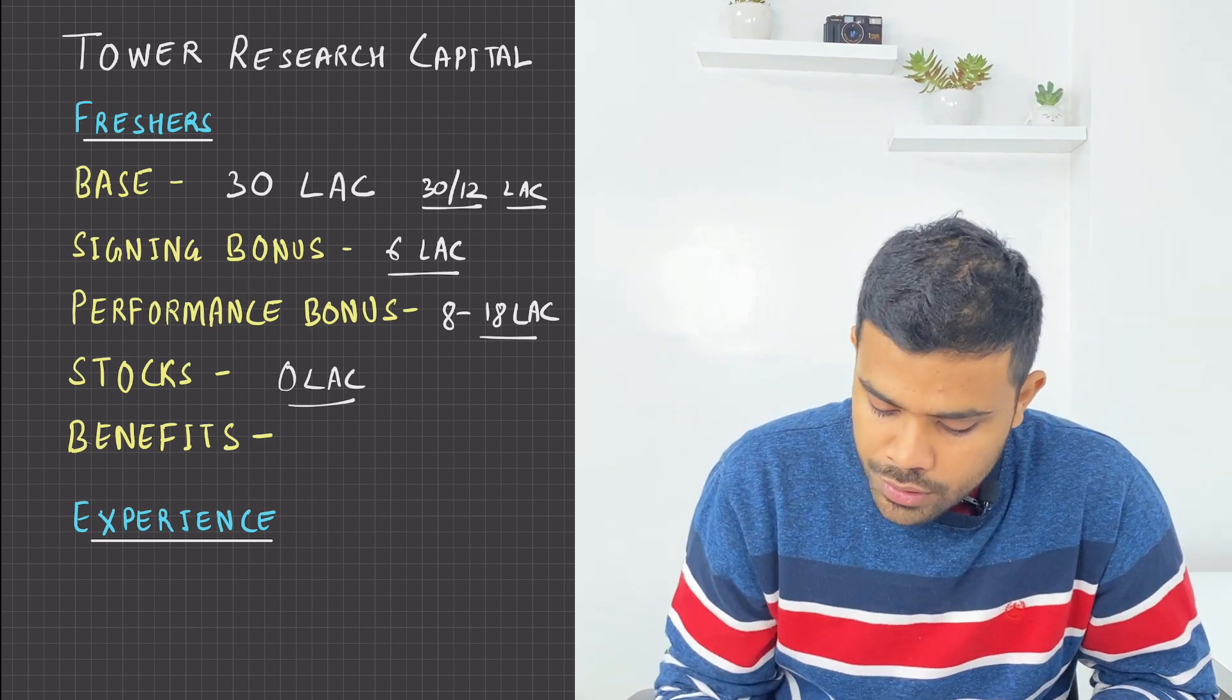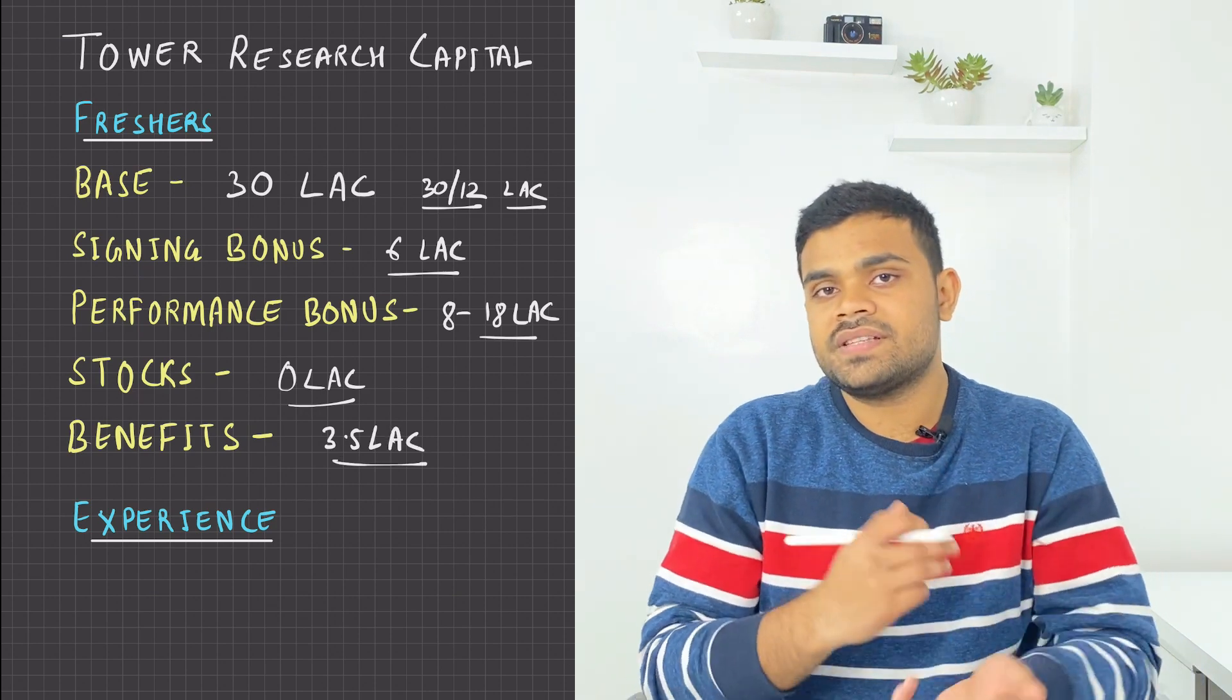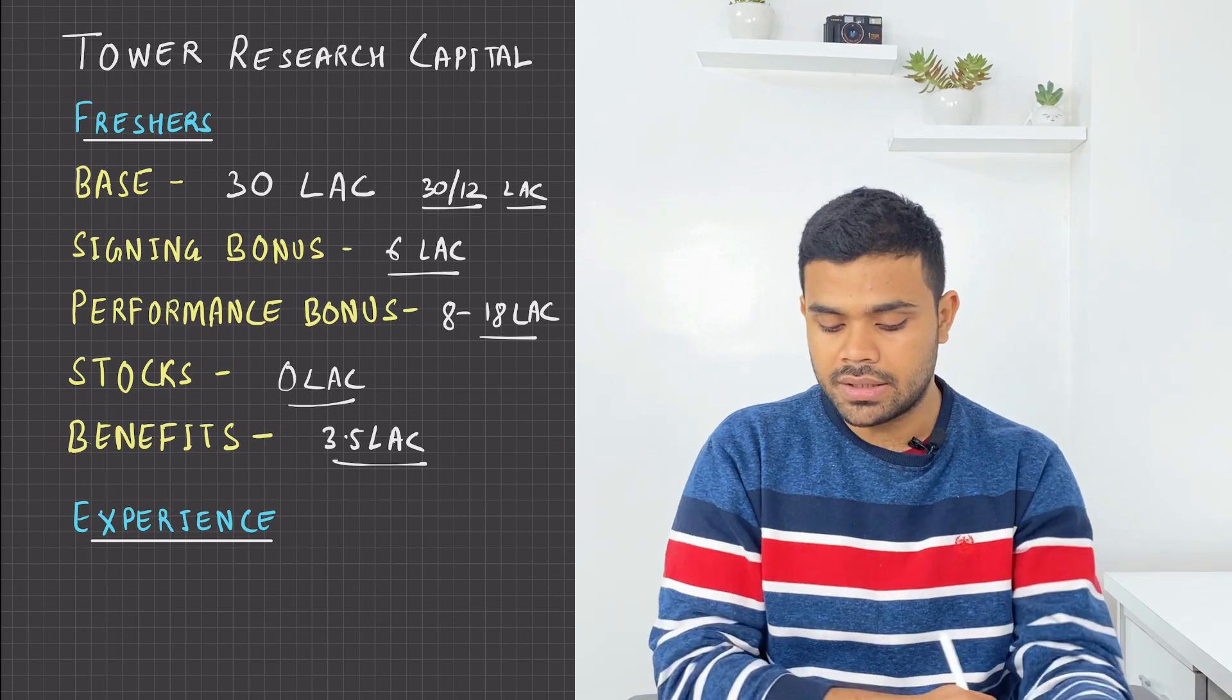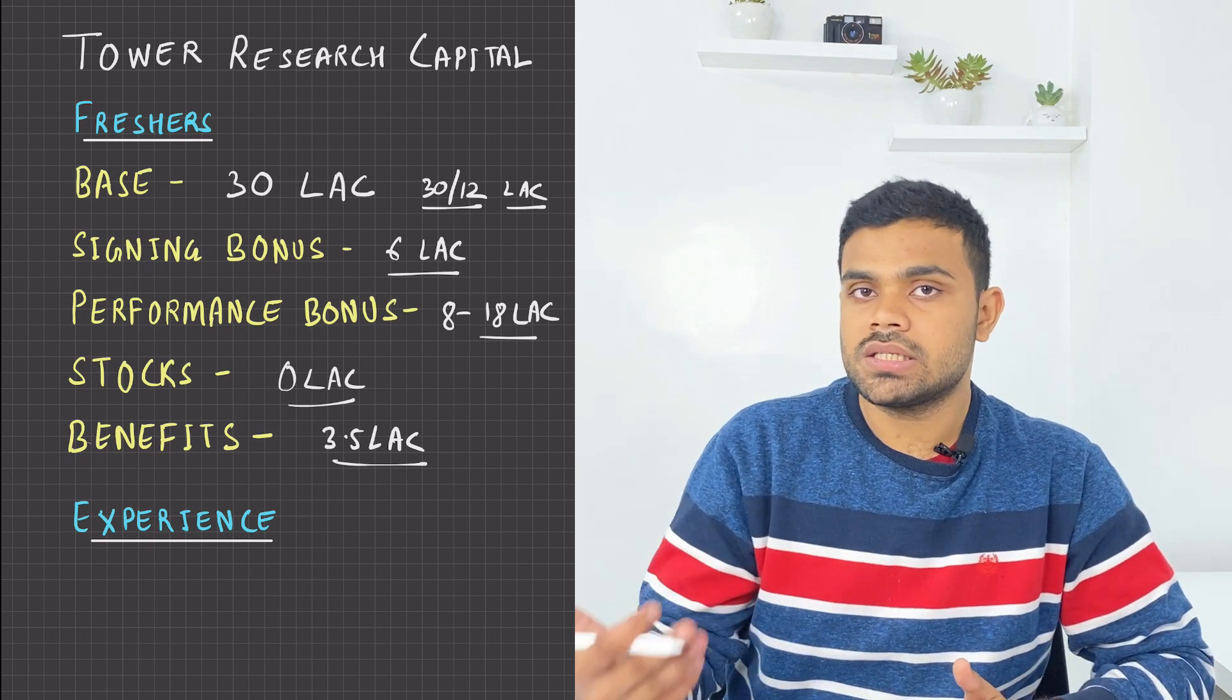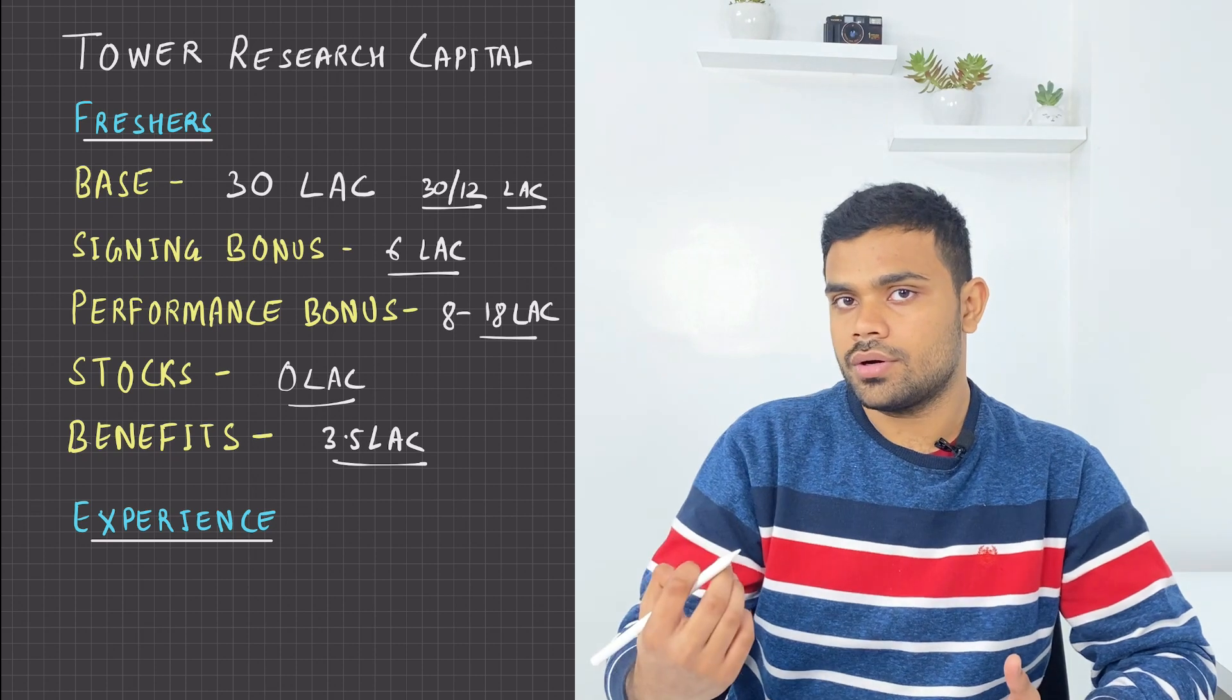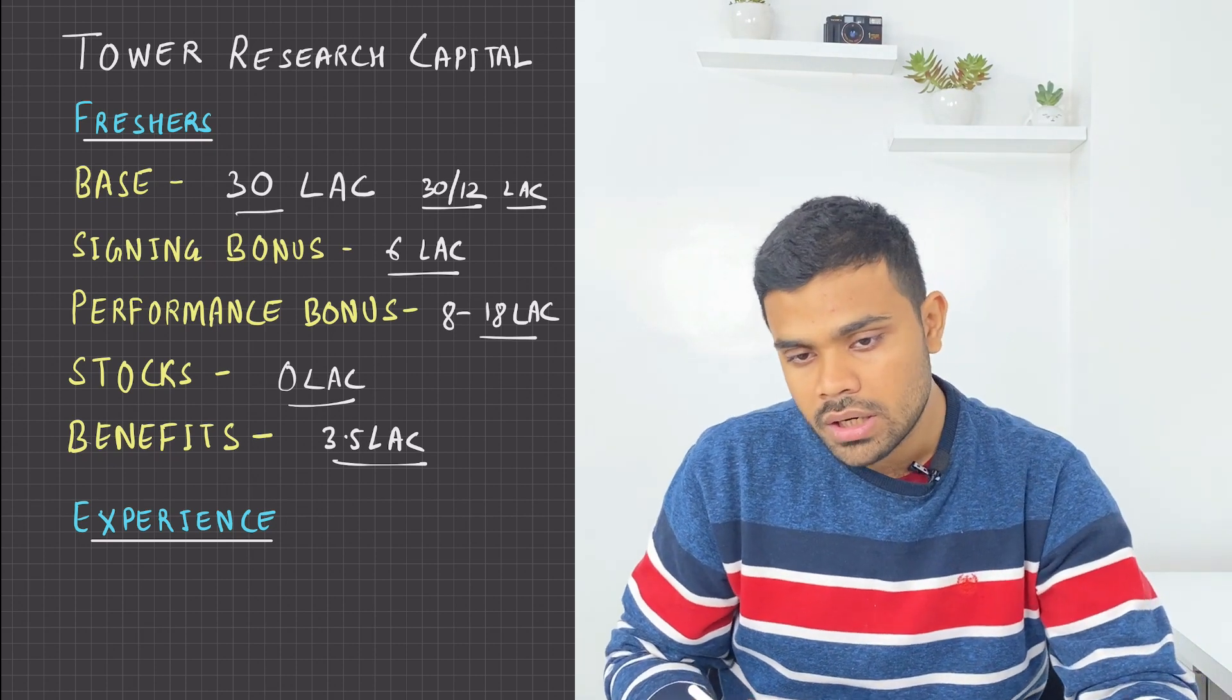Then other benefits. Here you will get more than 3.5 lakhs of other benefits. There are many facilities, many reimbursements that you will get, about 3 lakhs. Apart from this, in benefits, there is insurance - medical insurance and term insurance. Term insurance is basically 4 times of your base salary, which is your base component. 4 times that will be your term insurance.